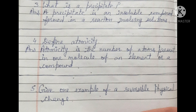Question 4: Define atomicity. Atomicity is the number of atoms present in one molecule of an element or a compound.